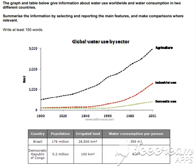The table illustrates the differences in agriculture consumption in some areas of the world by contrasting the amount of irrigated land in Brazil with that in the DRC.